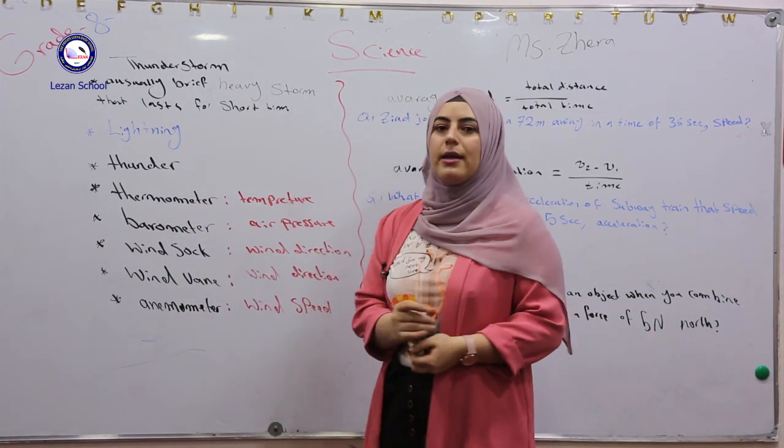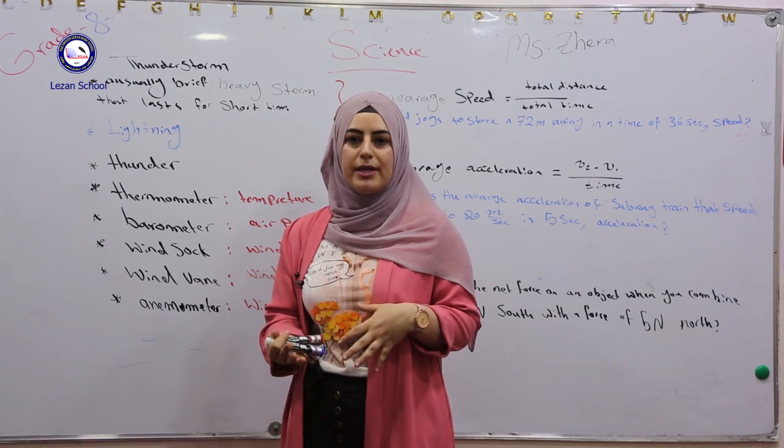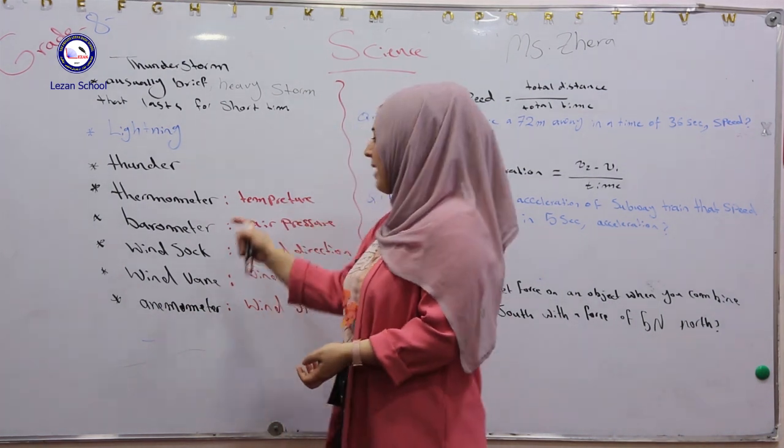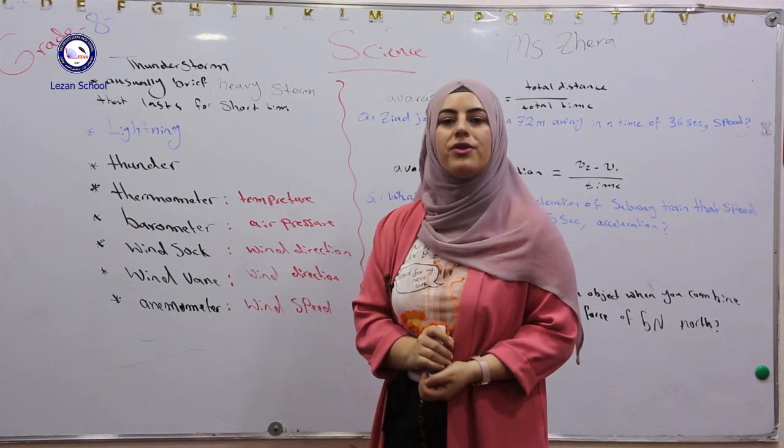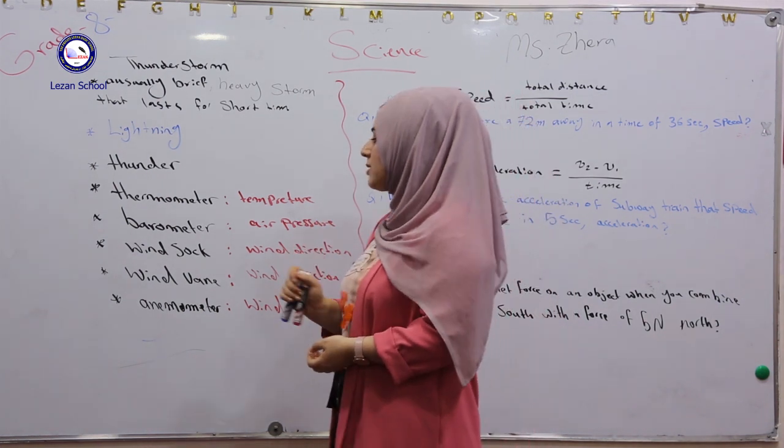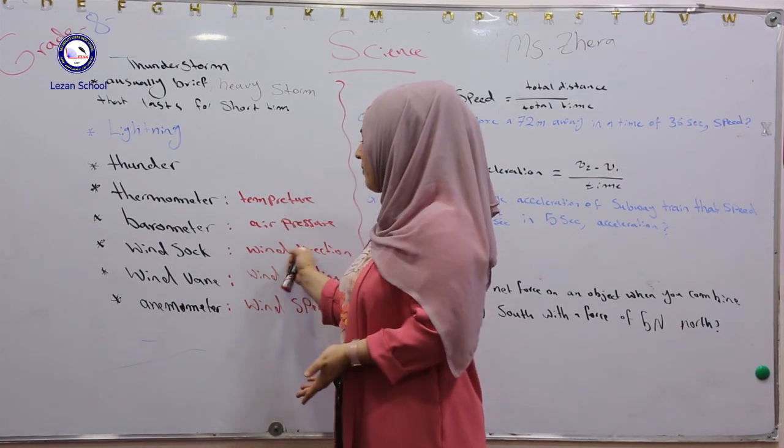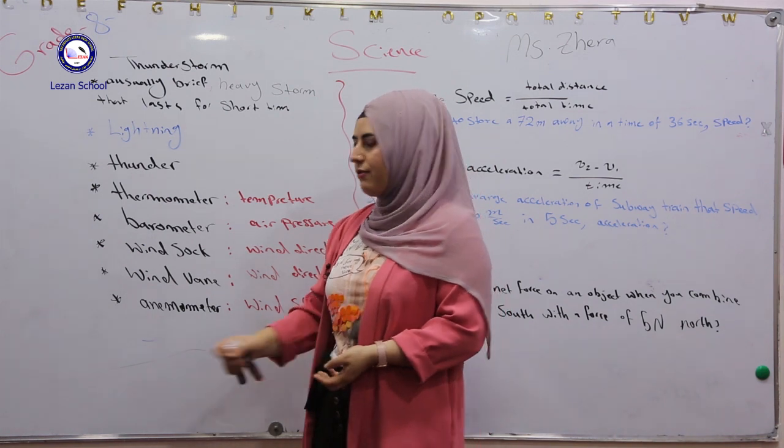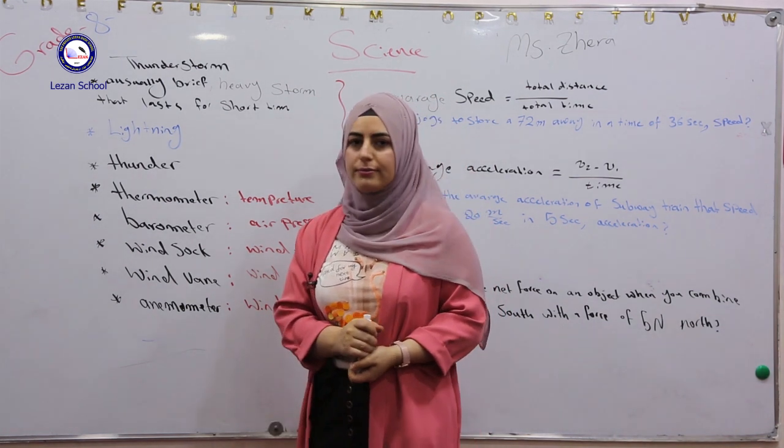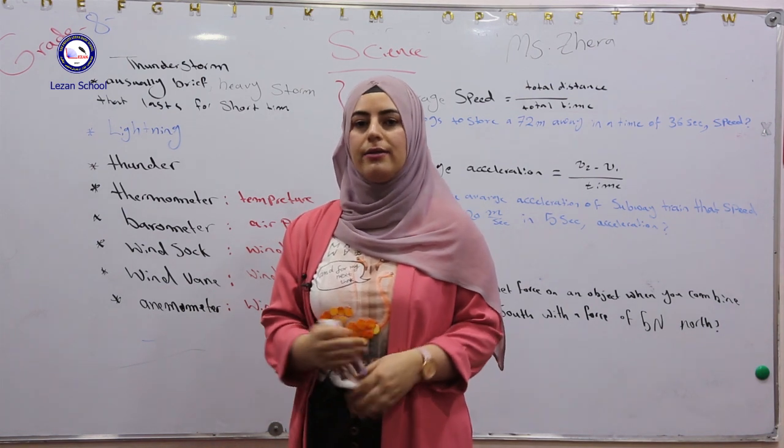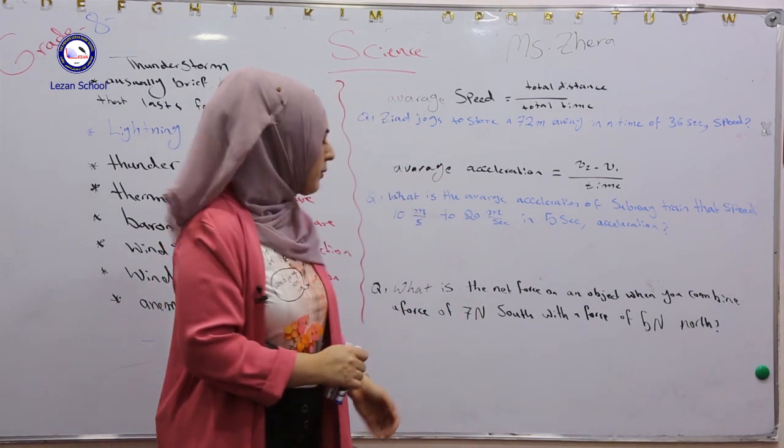Thermometer, as you know, this device can be used to measure temperature. Barometer can be used to measure air pressure. Wind sock and wind vane, both of them can be used for measuring wind direction. Finally, we have anemometer. Anemometer can be used to measure wind speed.